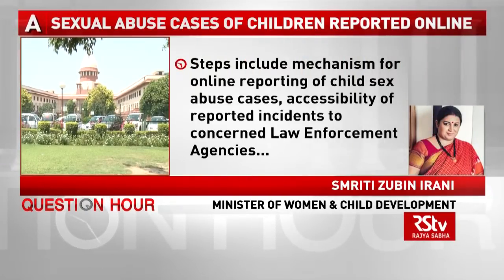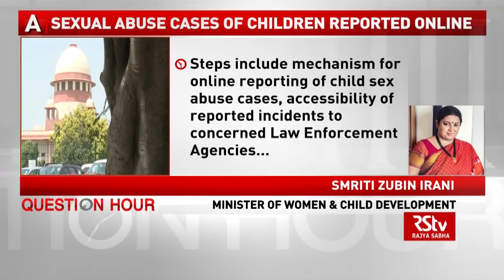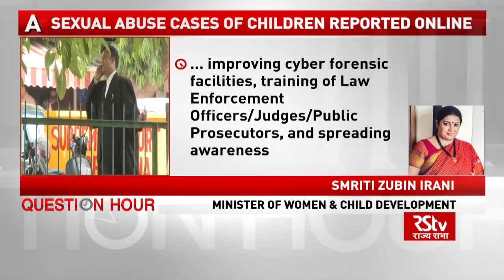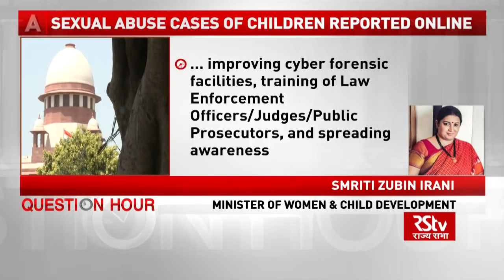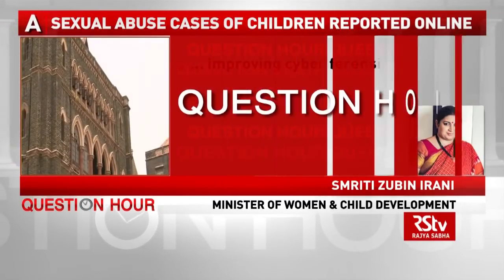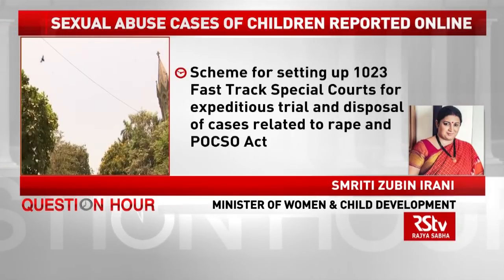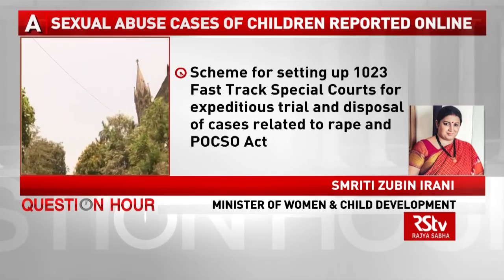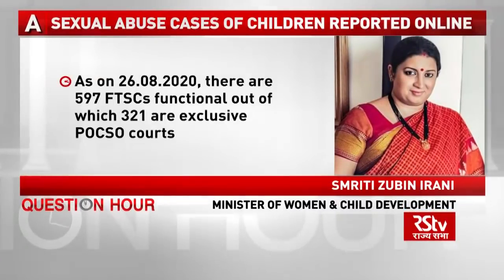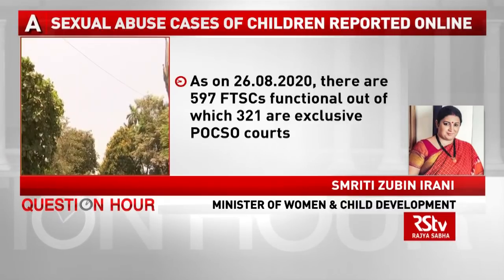These steps include a mechanism for online reporting of child sexual abuse cases, accessibility of reported incidents to law enforcement agencies, improving cyber forensic facilities, training of law enforcement officers, judges, and public prosecutors, and spreading awareness. The government implements a scheme for setting up 1,023 fast-track special courts for expeditious trial and disposal of cases related to rape and the POCSO Act. There are 597 functional fast-track special courts, of which 321 are exclusively POCSO courts.